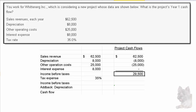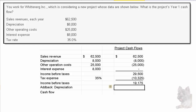Taking those into consideration, we get income before tax of $29,500. We then calculate tax by multiplying $29,500 times 35%. Since depreciation doesn't require any cash outflow, we add that back.